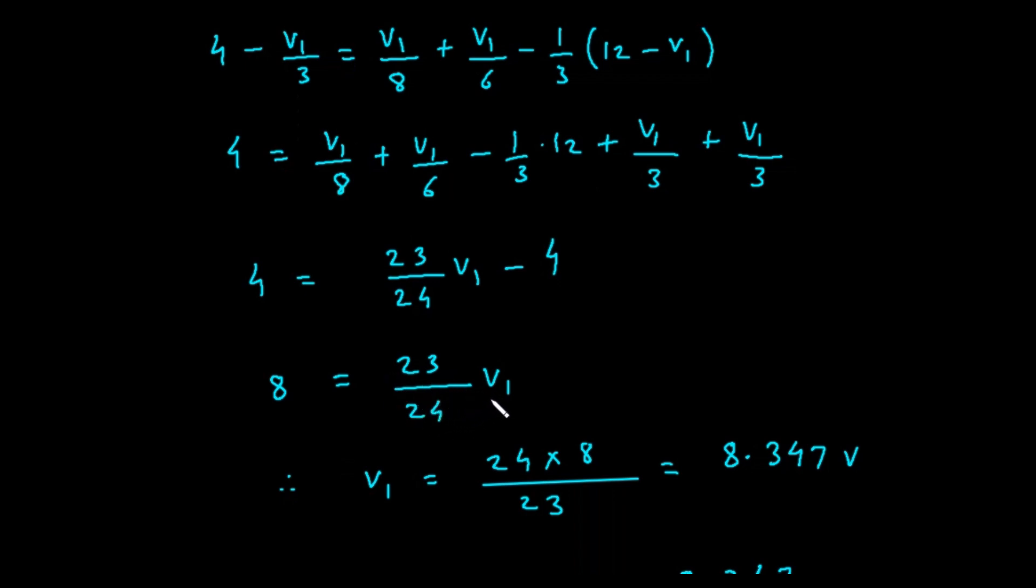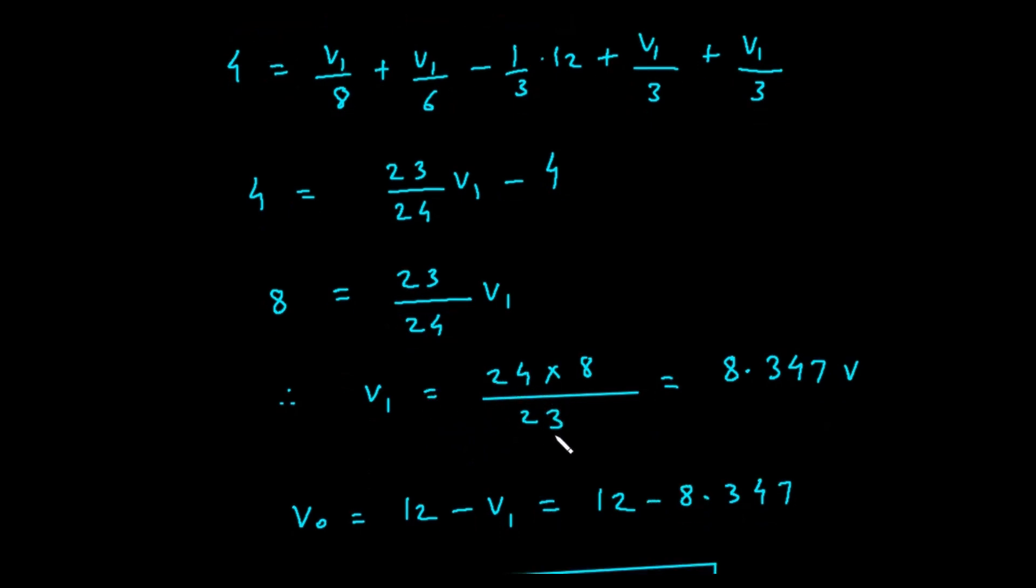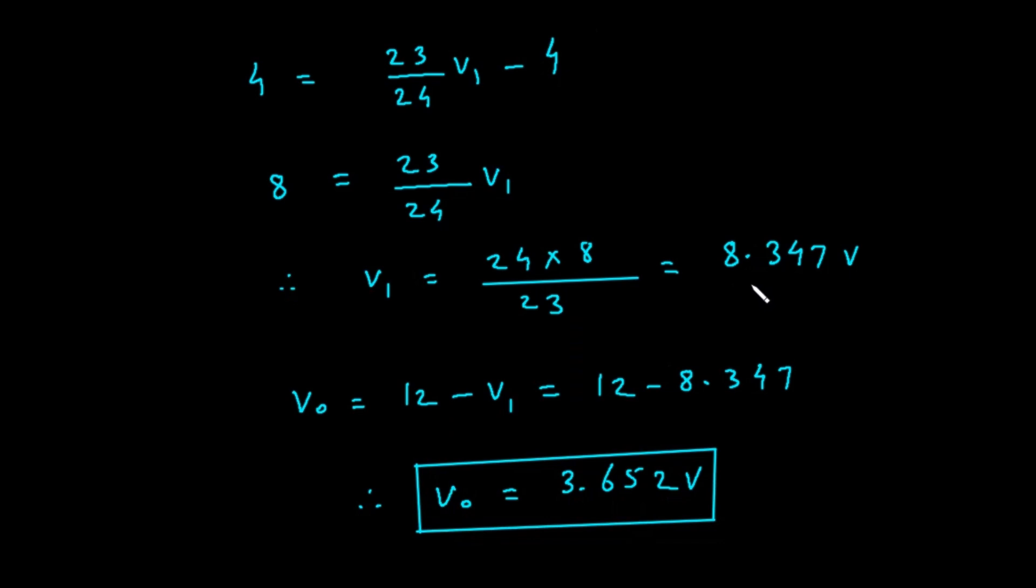To find V sub 1, we multiply both sides by 24 and divide by 23. V sub 1 equals 8 times 24 divided by 23. V sub 1 equals 192 divided by 23. Calculating this gives us V sub 1 is approximately 8.347 volts.